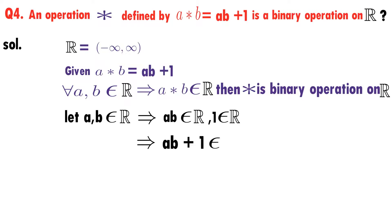ab is a real number, 1 is a real number. Add them: ab + 1. Addition of two real numbers is again a real number, so ab + 1 is a real number. What is ab + 1? a * b.